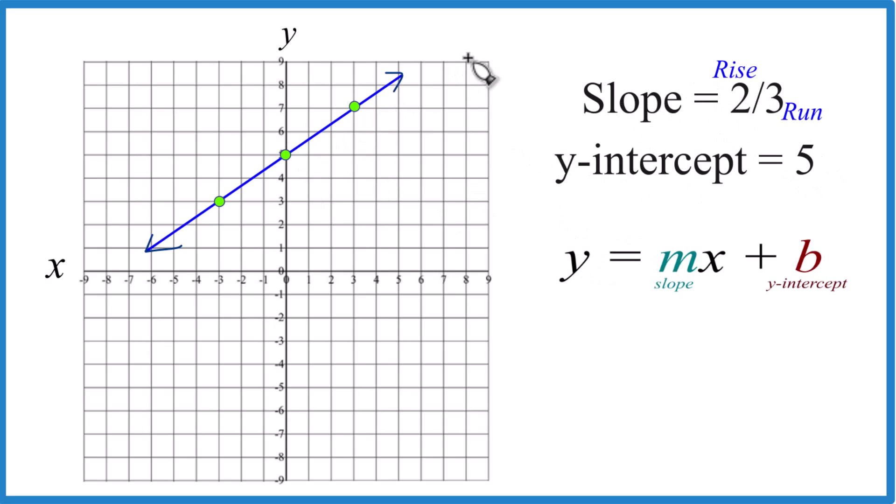If you want the equation for this line here, you could see that your y-intercept, that's five, and your slope, we said that's two-thirds, and then we have the x here. So y equals two-thirds x plus five, that's what we just graphed.